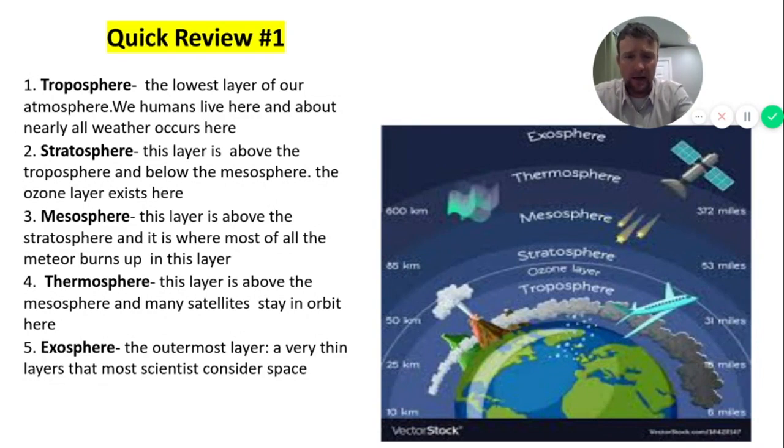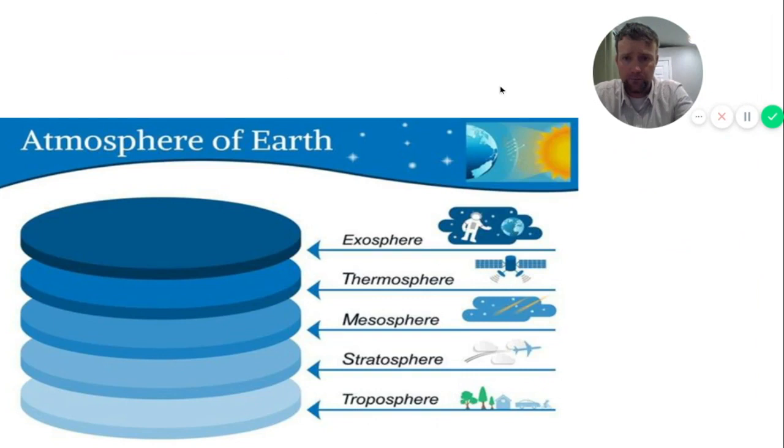Exosphere is the outermost layer. Many scientists believe to kind of be, this is the edge of space. The atmosphere is super thin at this point and it's very cold. Okay, moving on. Here's just another little graph to kind of look at that. A different representation and you can see from this image right here. This is showing you a thin layer of the ozone and we'll talk about that.